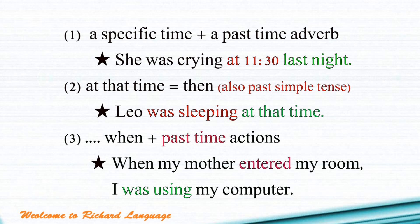The third way we use past continuous tense is whenever you see 'when' plus a past action, especially one that is a very short period of time. When you complete one short action, you use past continuous tense in your main sentence. For example: 'When my mother entered my room' — entering is a very short action — so you say 'I was using my computer.'